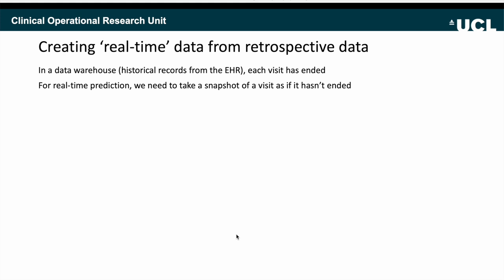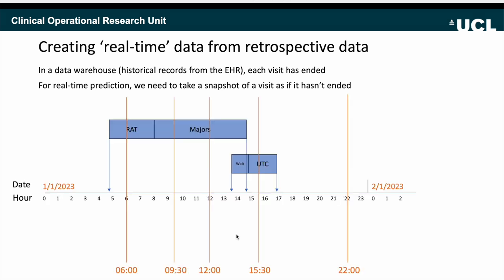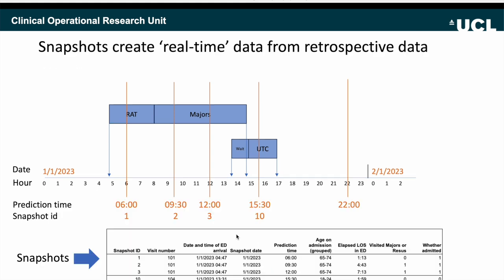These locations are useful indicators of what's going to happen at the end of the visit — if a patient visits majors they're more likely to be admitted than if they visit the urgent treatment centre or the minors area. When thinking about how to predict demand from these patients, we need to take a snapshot of the visit as if it hasn't ended. Imagine rolling through this data in a cycle where you take your five prediction times in the day — 6am, 9:30am, midday, etc. — and take a snapshot of what we know about the patient at that moment. This recreates a real-time view from retrospective data, and we can derive what I call a snapshot. We observe the first visit three times — three snapshots — and the second visit once.